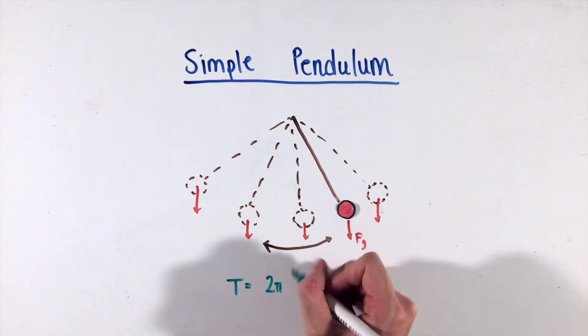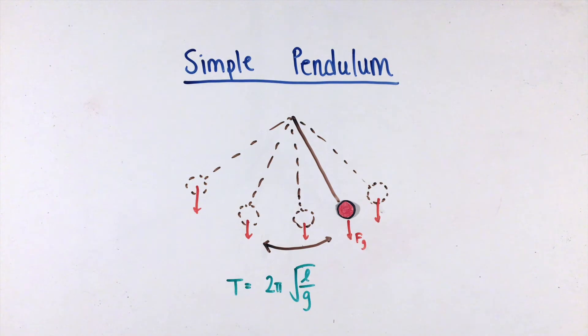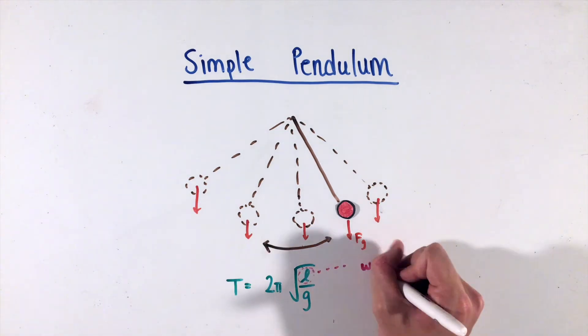The first vital formula to know about is the period equation, which provides a relationship between the period of the swing, or the length of time it takes for the object to make one full swing back and forth, and other variables. Most notably, you should understand that the longer the string is, the longer the period is.